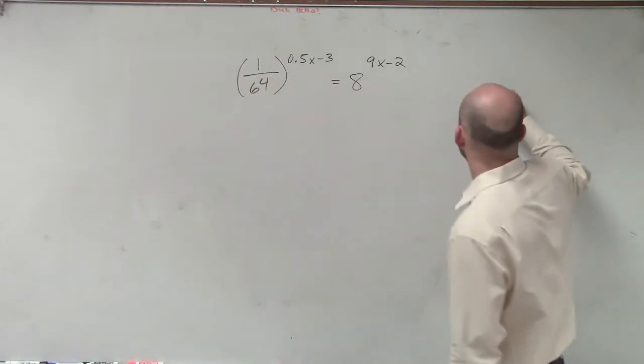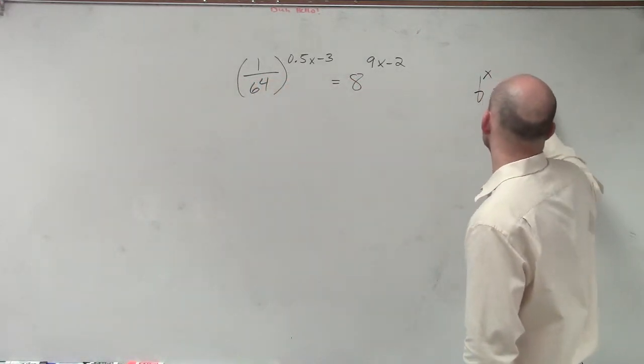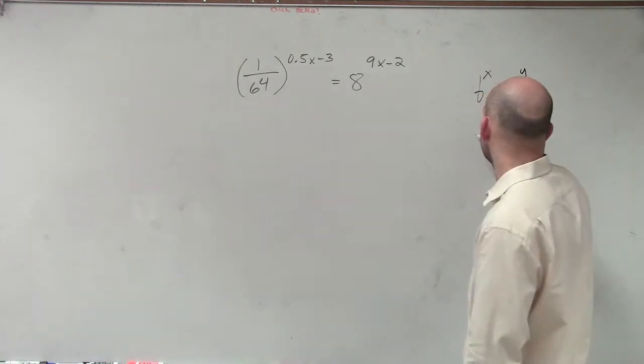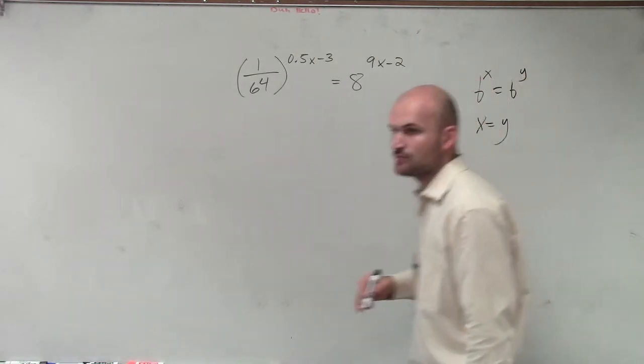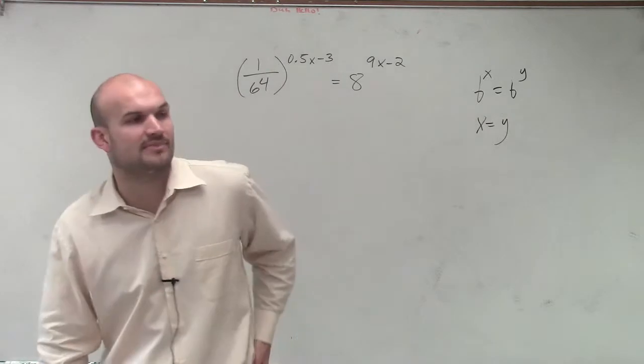So we know that the equality rule, which we stated in the last video, was b to the x equals b to the y, therefore x equals y. When b is greater than 1 and b cannot equal 0.